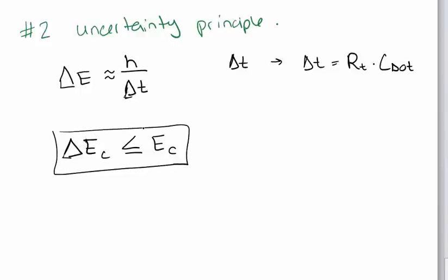In other words, in order to avoid random tunneling that we aren't controlling, our uncertainty in the amount of energy it takes to add an electron has to be less than the actual energy it takes to add an electron to the capacitor. So, this is rule number two, and it can be boiled down to if we substitute dt is equal to RT C dot and we substitute our equation for EC from the previous slide.